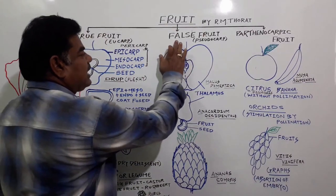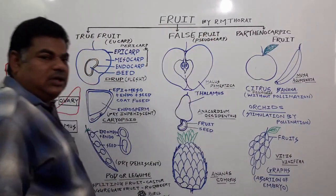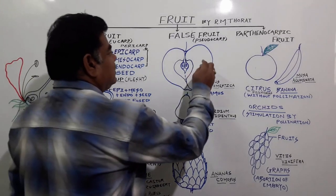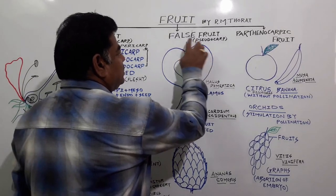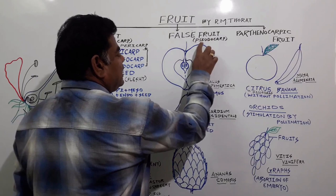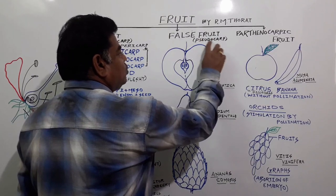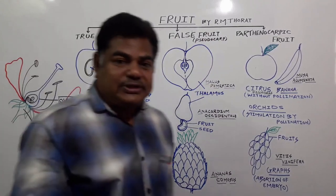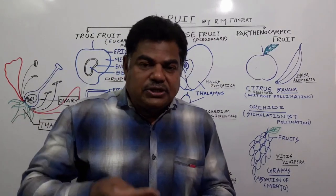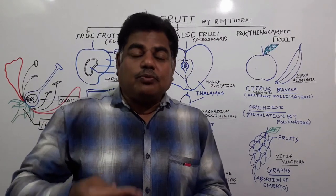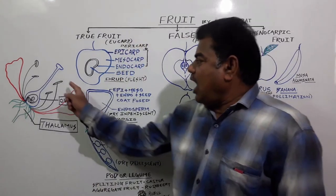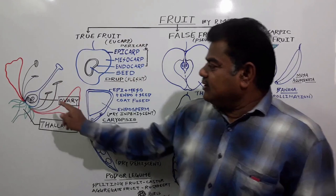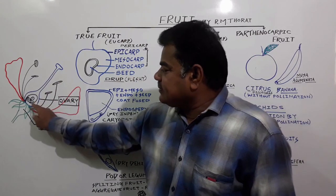The second type of fruit we call a false fruit — pseudo means false. This is also called a pseudocarpic fruit. How does false fruit formation take place?